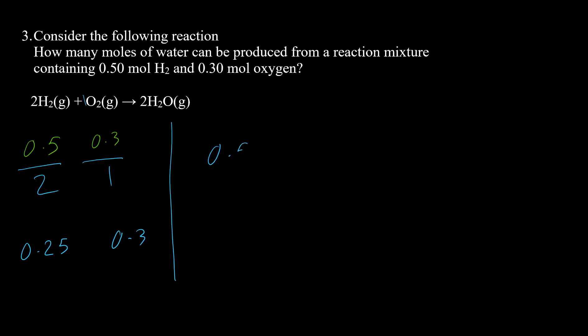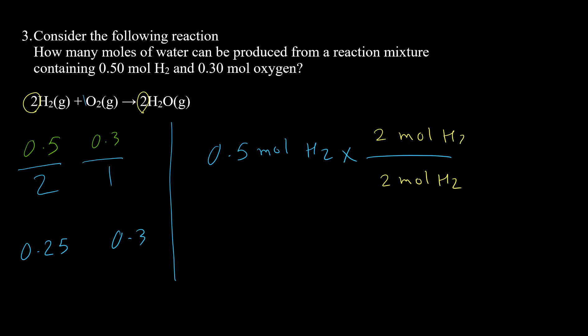Starting with 0.5 mol H₂, and using the ratio that 2 mol H₂ produces 2 mol H₂O, the mol of H₂ and the coefficients cancel, giving a final answer of 0.5 mol of water. This is one way to calculate the product in limiting reactant problems.